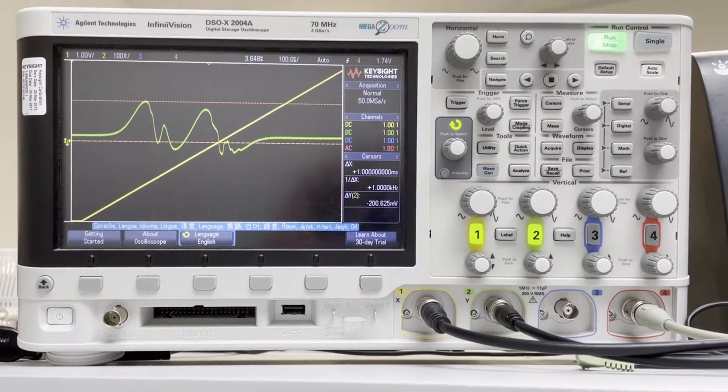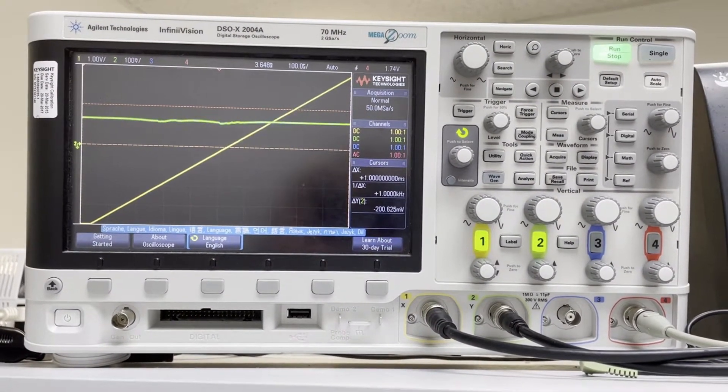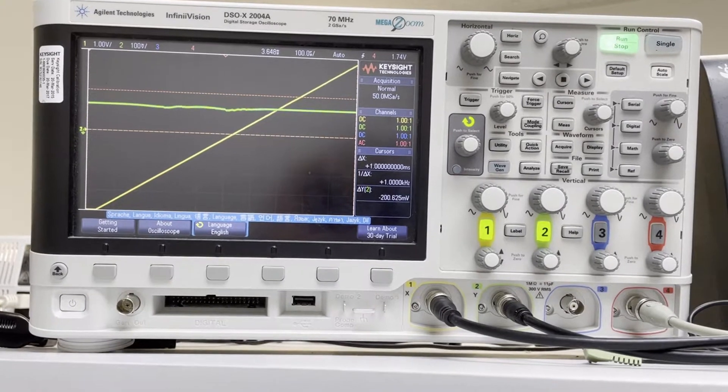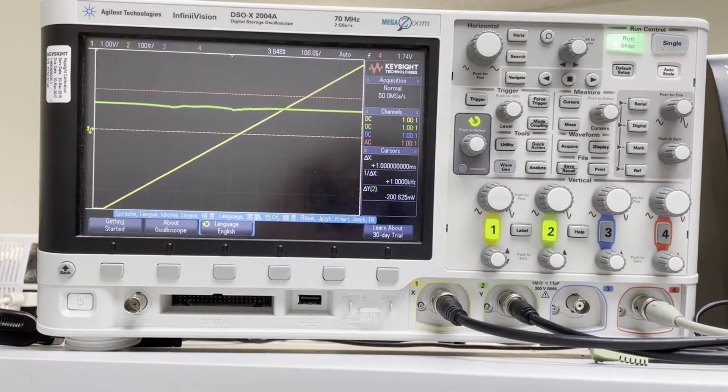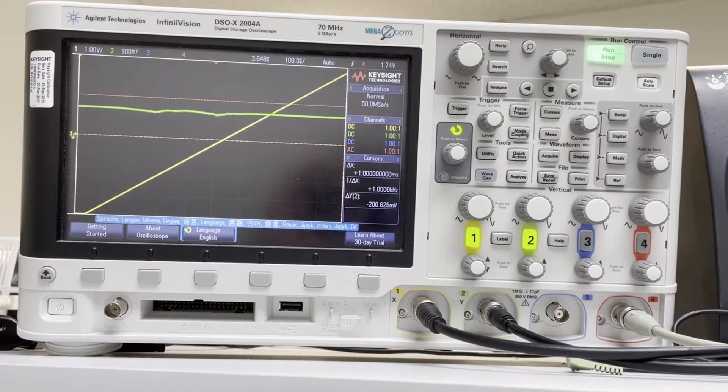So the first thing I'm going to do to optimize this system is turn the phase and dither all the way clockwise on the front panel of the D2-125.